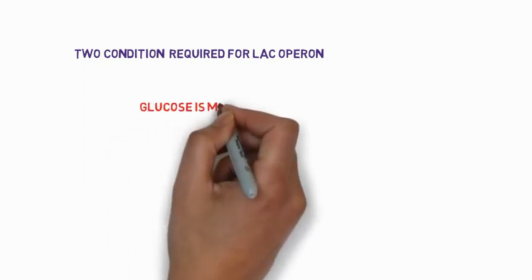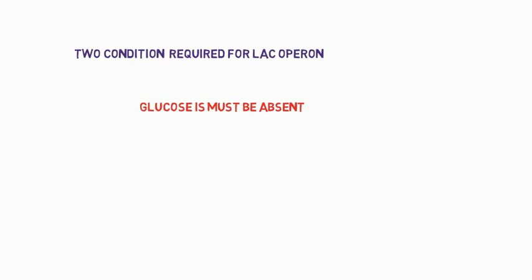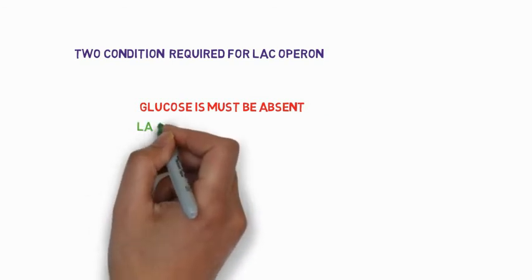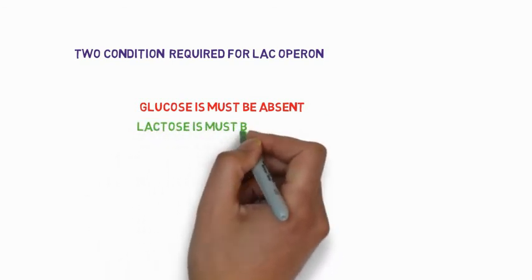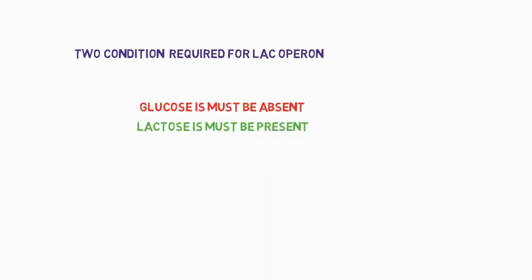So there are two conditions required for the lac operon to be turned on. First condition is glucose must be absent. If it is present it will bring cAMP level down. And the second one is that lactose must be present.